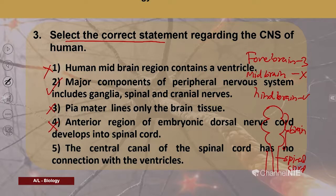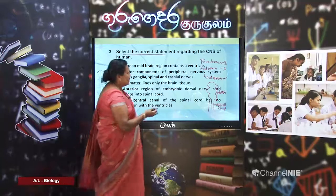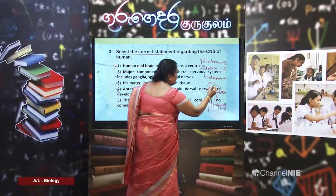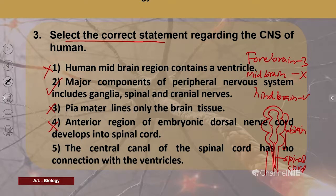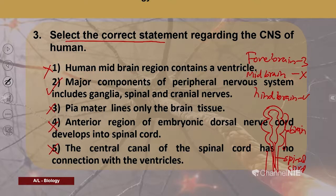Fifth option: the central canal of the spinal cord has no connection with the ventricles. This is also wrong. The ventricles within the brain are connected and continue with the central canal of the spinal cord. Therefore, this statement is incorrect. The correct answer for the third question is the second option.